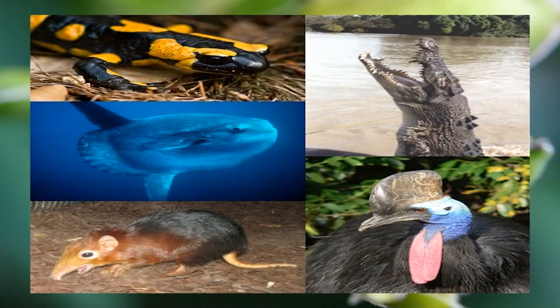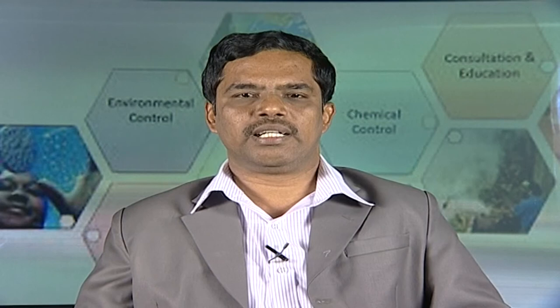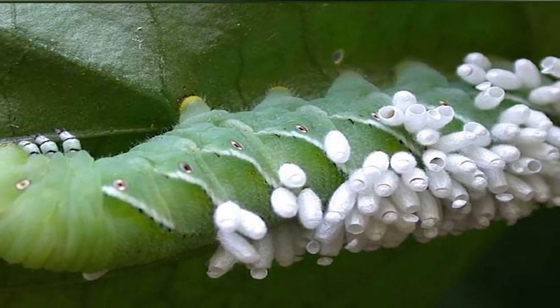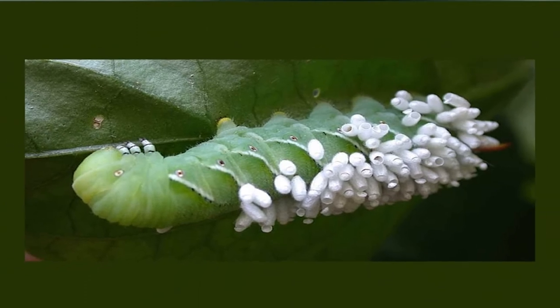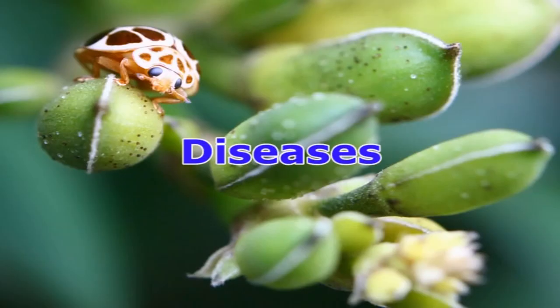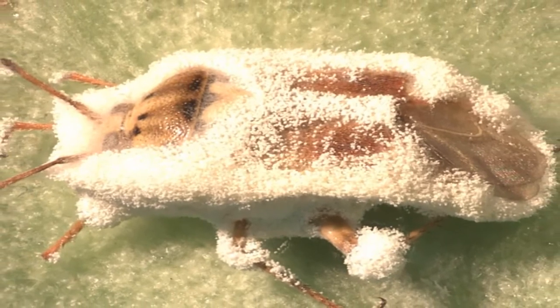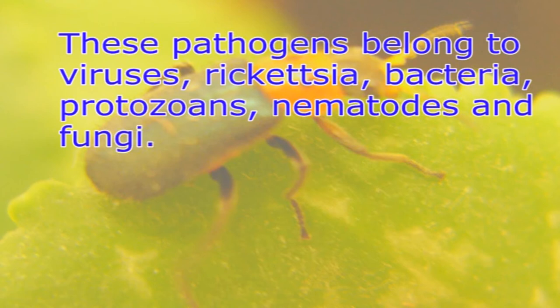Natural enemies: there is not a single group of vertebrates from fishes up to mammals that does not feed on insects, and these animals keep insect populations under check to a great extent. Among insect species themselves, there are entomophagous species that either capture and devour other insects (predators) or lay their eggs in or on the body of other insects (parasites). Diseases: insects are also attacked by microbes referred to as entomogenous pathogens that produce fatal diseases, keeping a check on their populations. These pathogens include viruses, rickettsia, bacteria, protozoans, nematodes, and fungi.